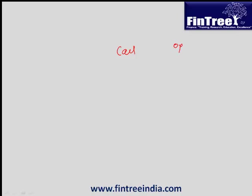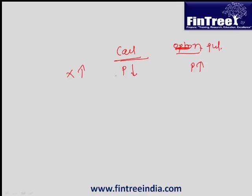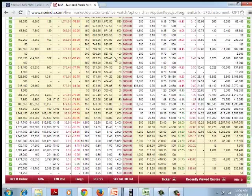The conclusion: for a call option, as the strike price increases, the call option premium decreases. For a put option, as the strike price increases, the premium increases. So the relationship between strike price and put option premium is positive, and for call option premium it is inverse or negative.